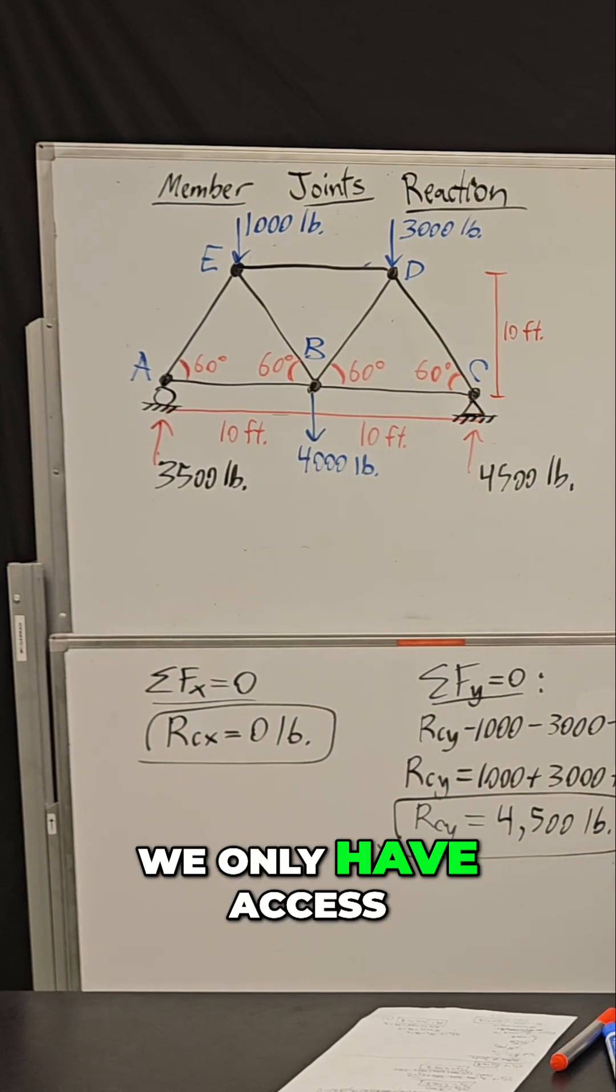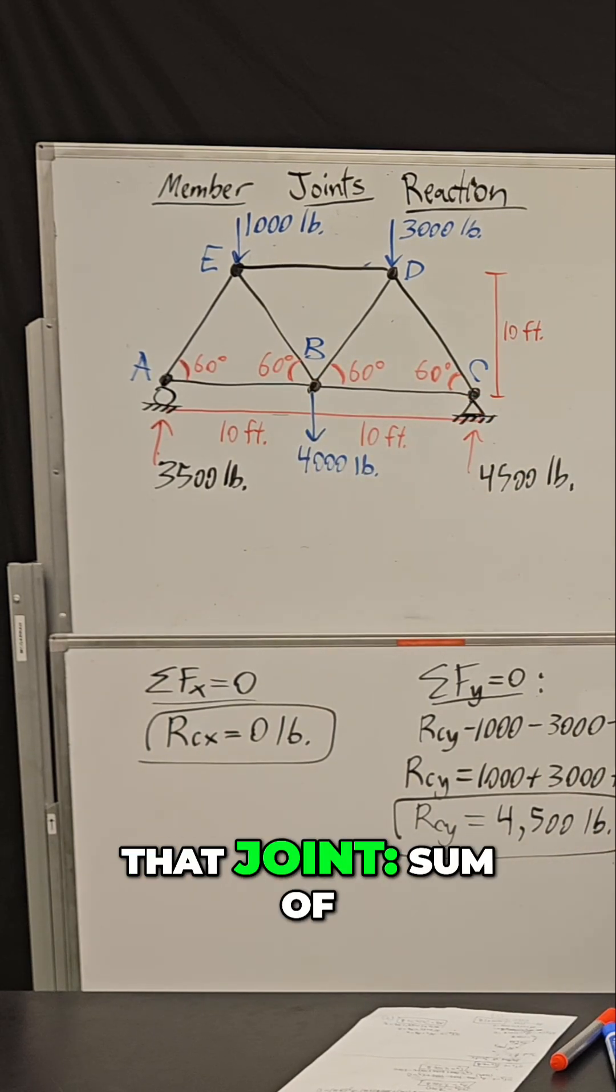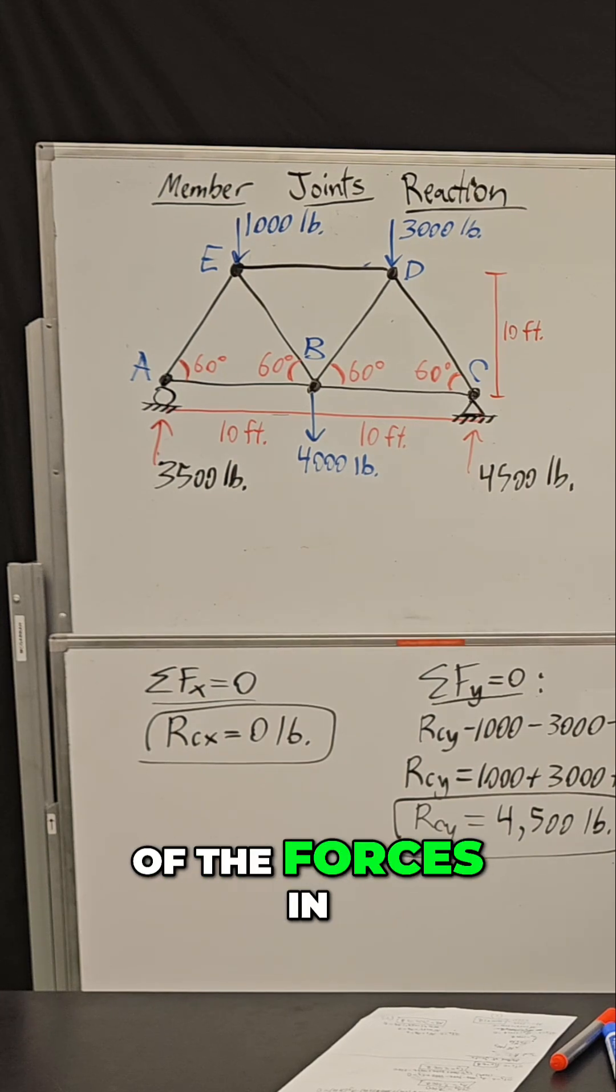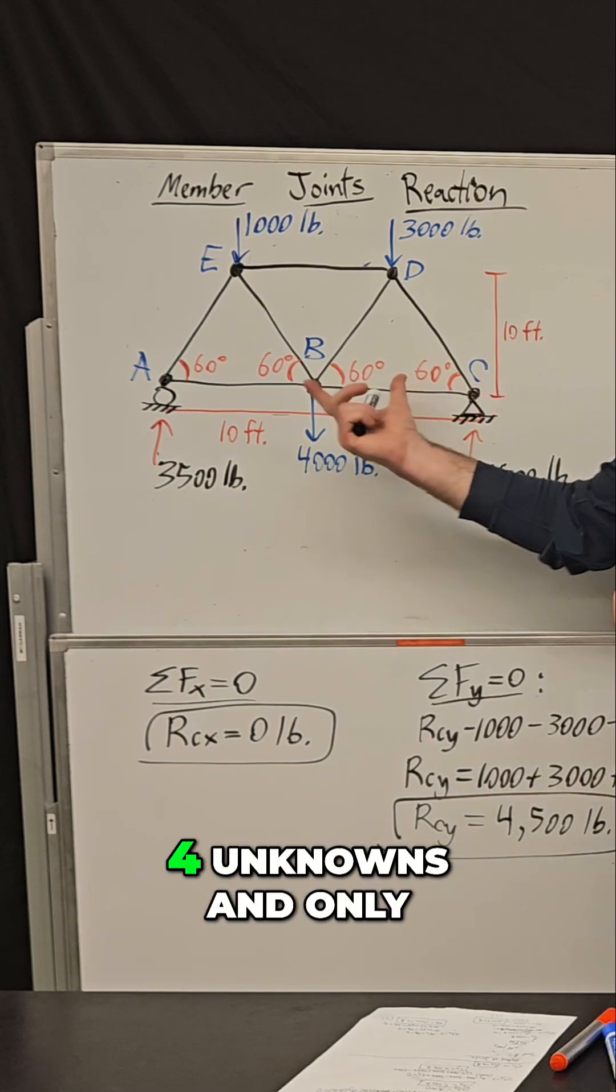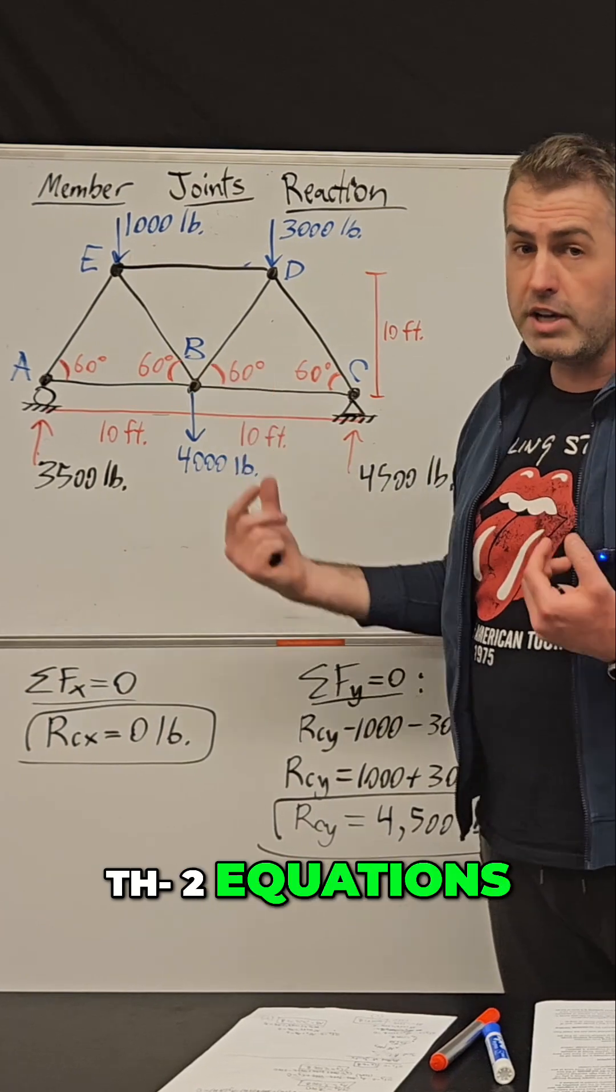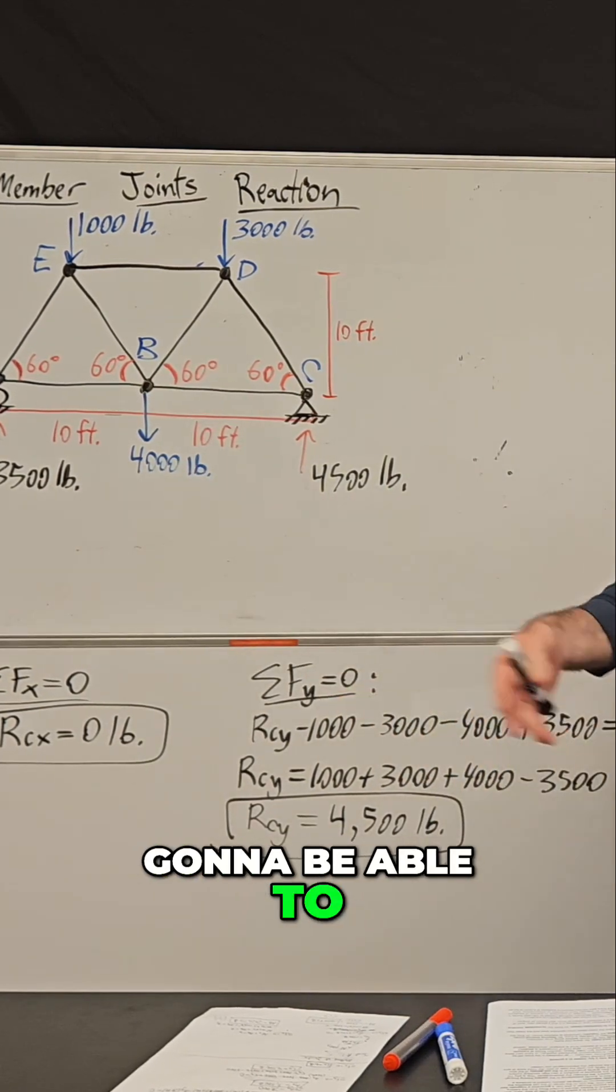But if you recall, we only have access to two equations at that joint: sum of the forces in the X direction and sum of the forces in the Y direction. So if we have four unknowns and only two equations, there's no way we're going to be able to start at joint B.